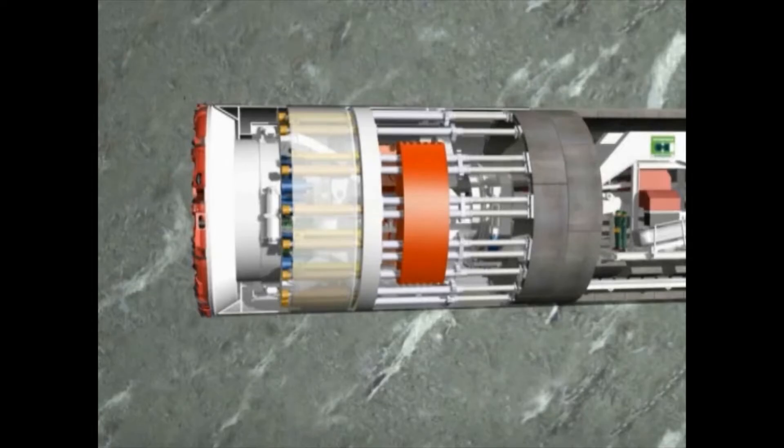The double-shield TBM owes its name to a special constructional design. In the front part of the machine is a forward-moving front shield. It permits an extension of the cutter head.